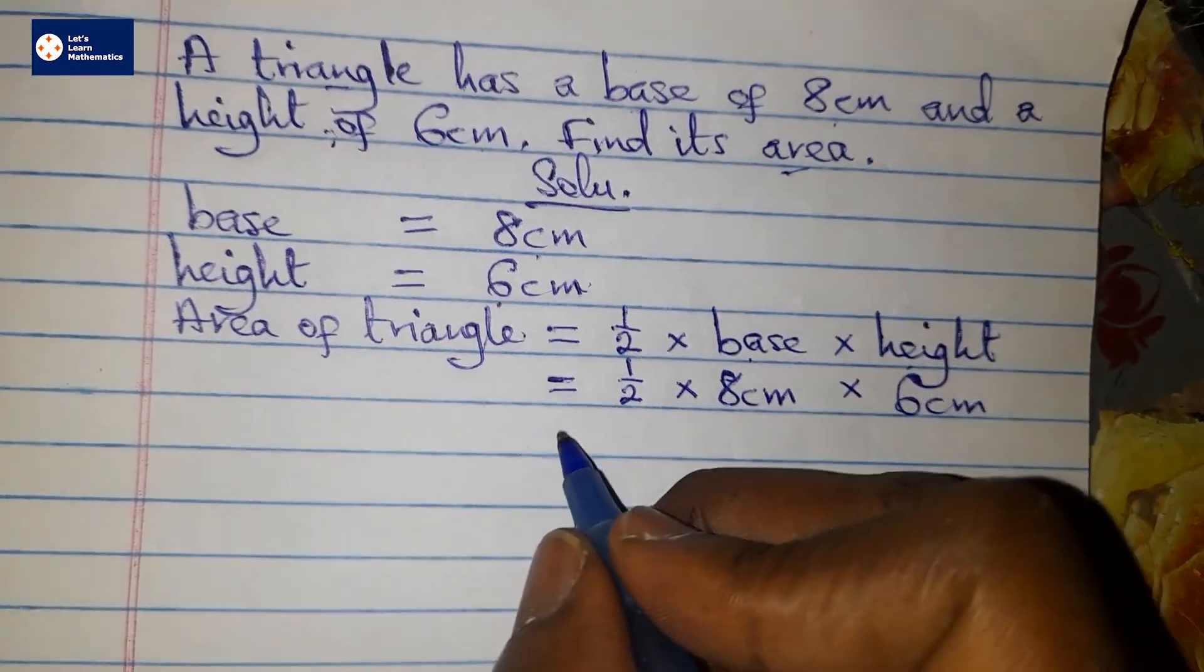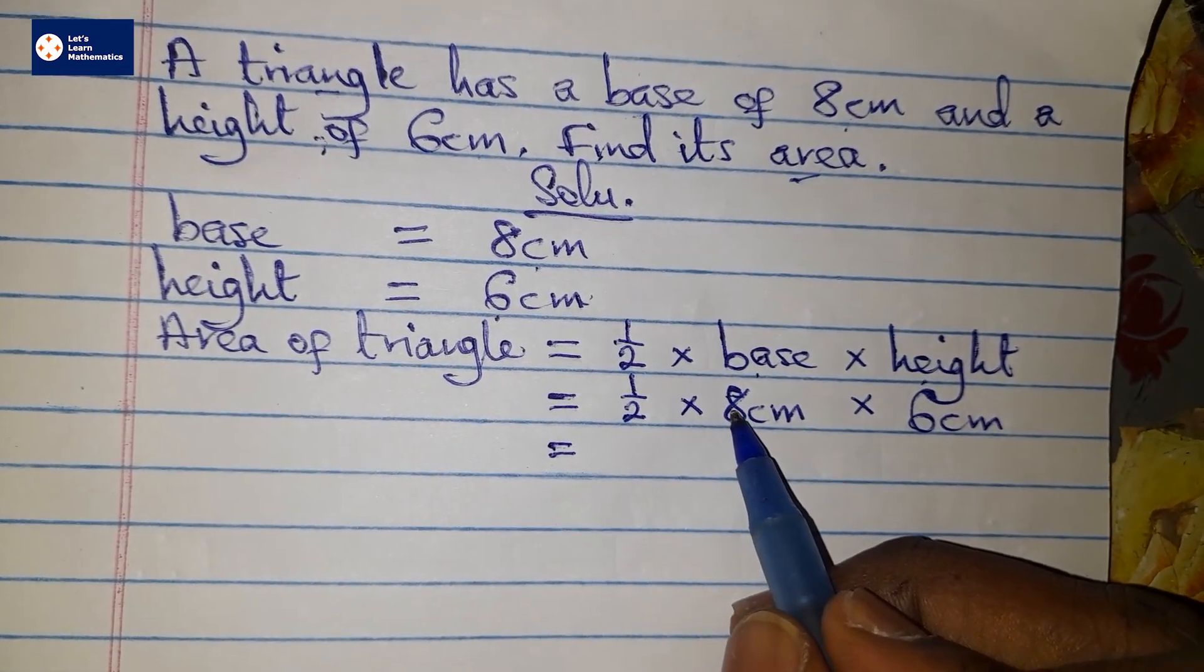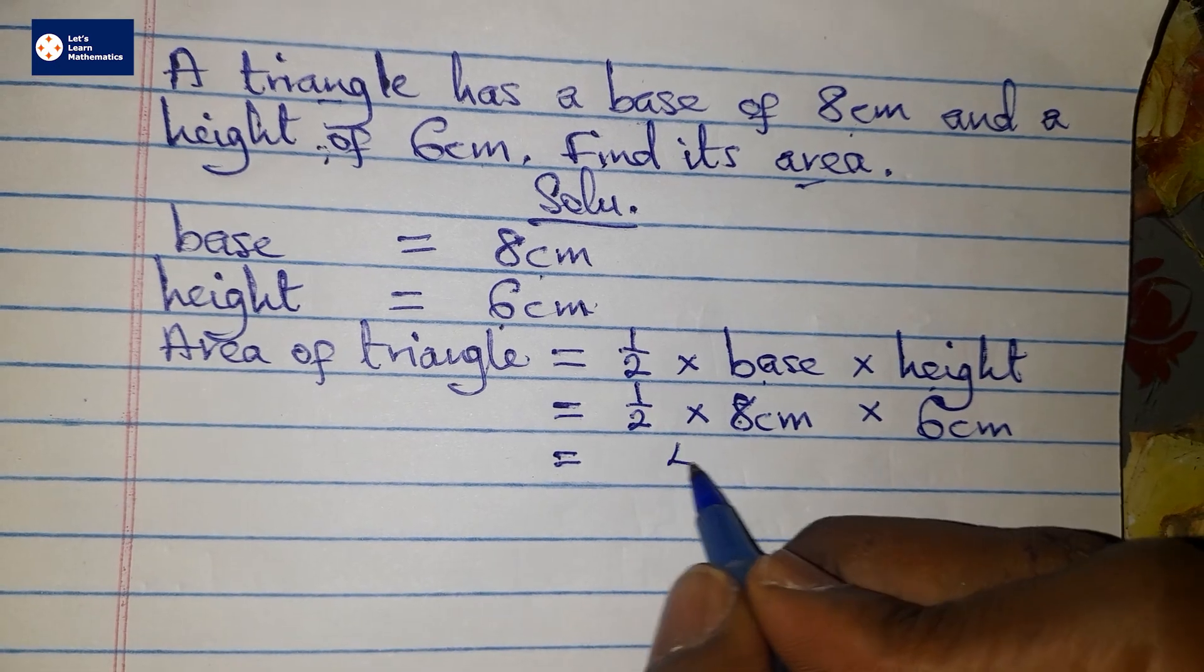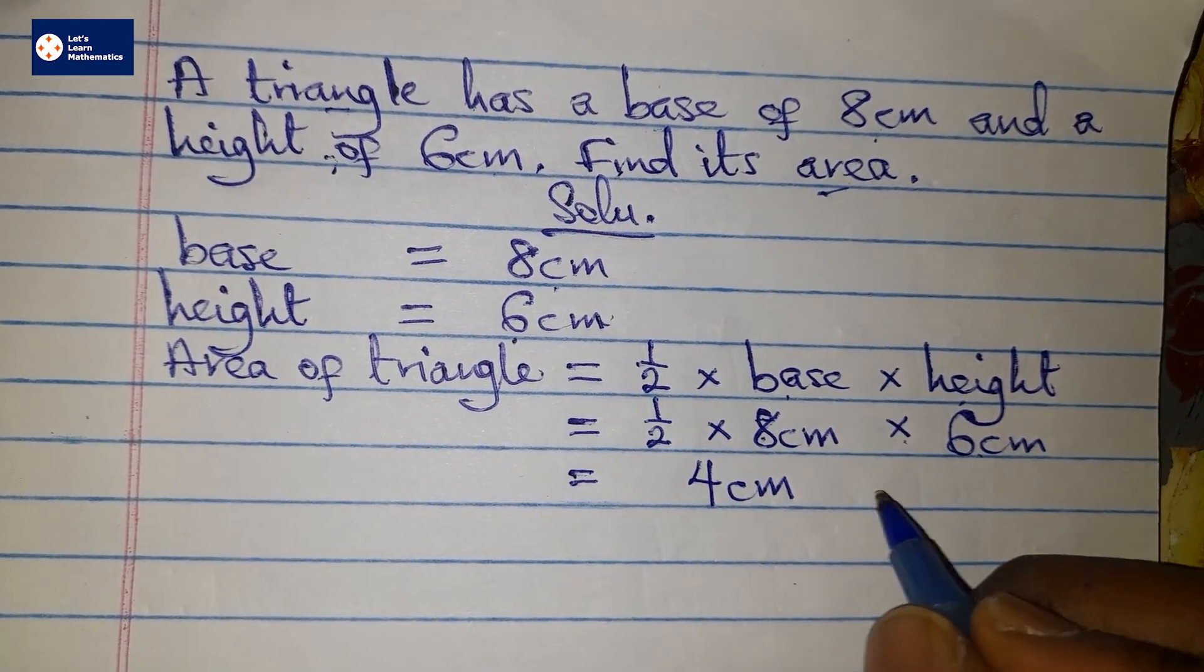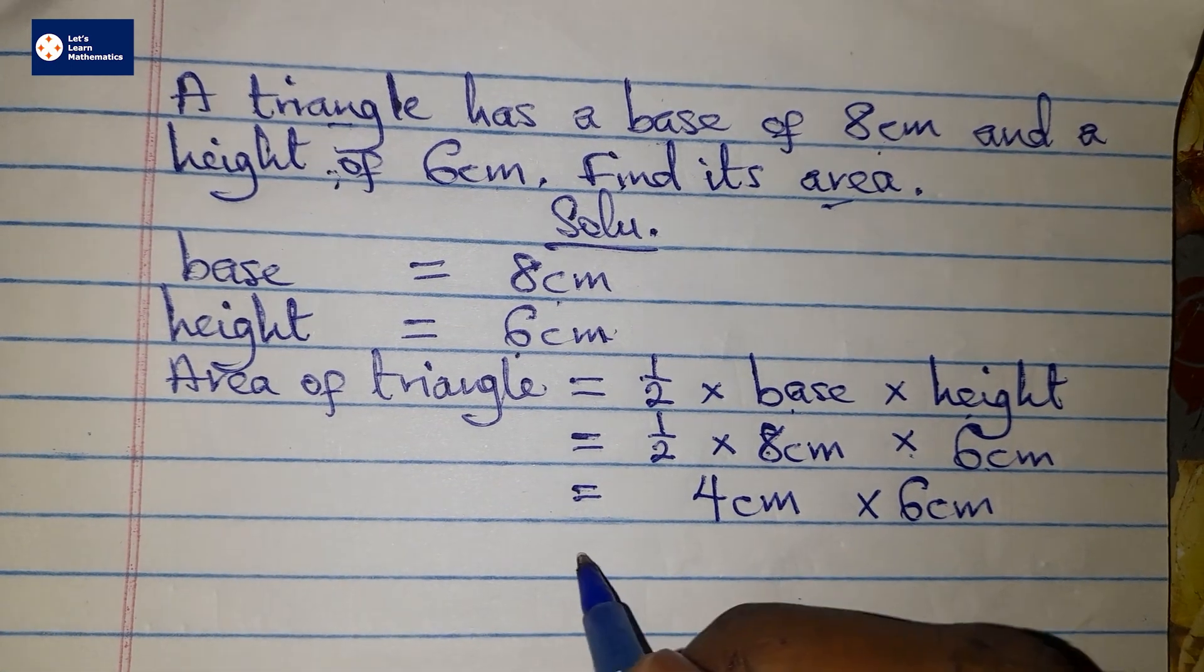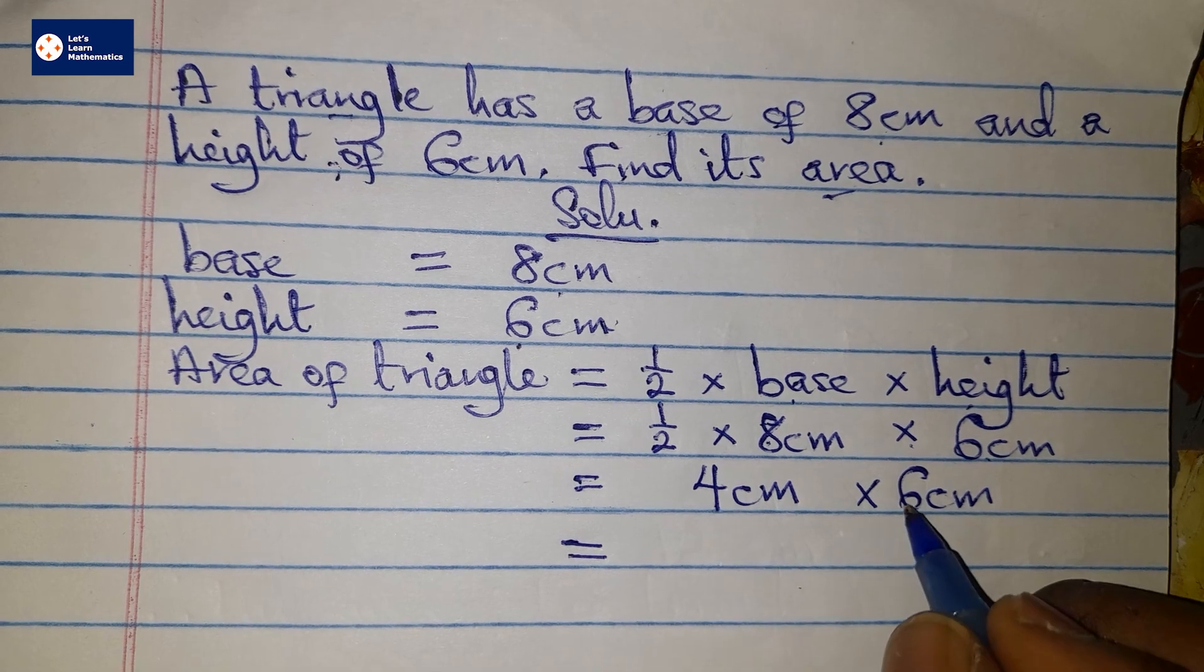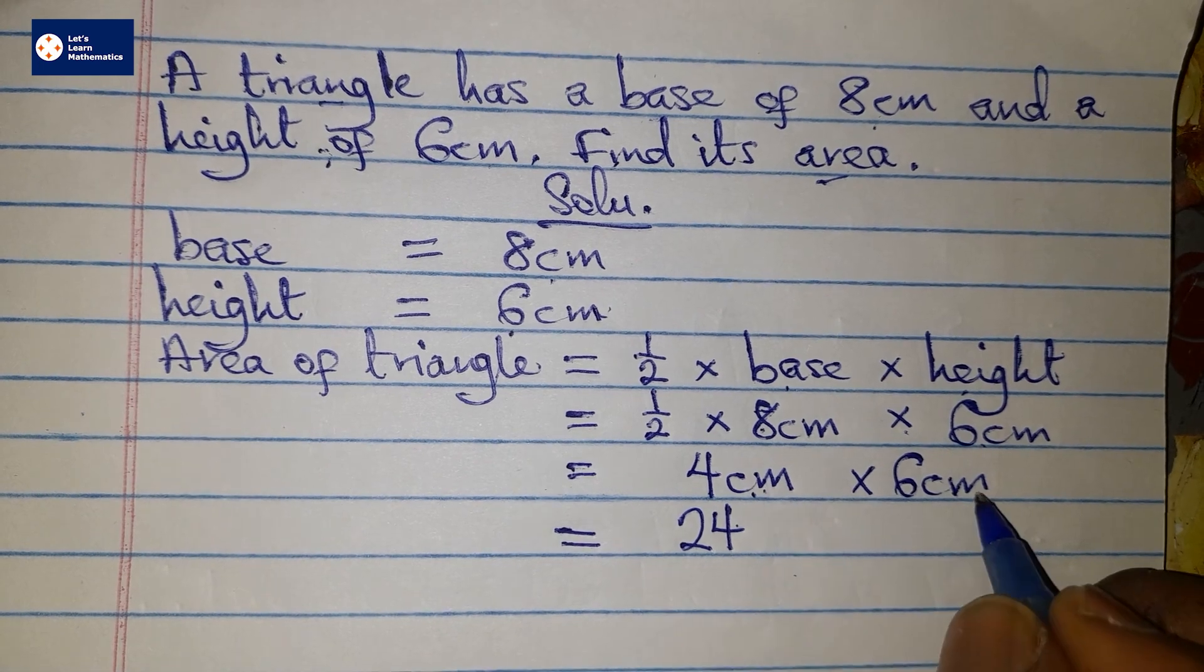So I'll also write that. Then I know that half of 8 is 4, so this will give us 4 centimeters times the 6 that we have here. 4 times 6 is 24 centimeters. We have it twice here, so centimeters squared.